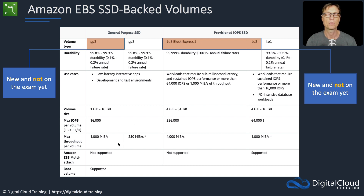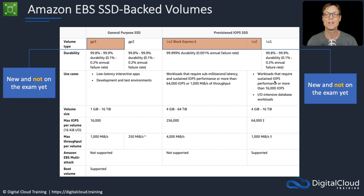We measure performance in two principal ways: IOPS (I/O per second) and throughput per volume. EBS multi-attach is not supported for GP2 but it is supported for IO1. The IO1 is where you require more sustained IOPS — if you need more than the 16,000 IOPS available from a GP2, you must go with an IO1, which supports up to 64,000 IOPS per volume.